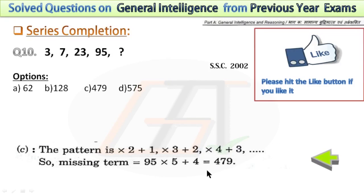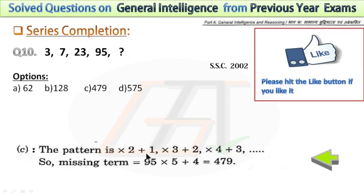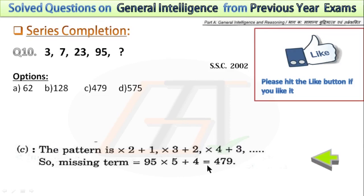In the next problem, again this is a combination of multiplication and addition. For multiplication, we are using consecutive numbers like 2, 3, 4, and for addition, we are also using consecutive numbers 1, 2, 3. Looking at this pattern, after 4 the next multiplier is 5, and after 3 the next addend is 4. If we multiply 95 by 5 and then add 4, we get the missing term, which is 479.